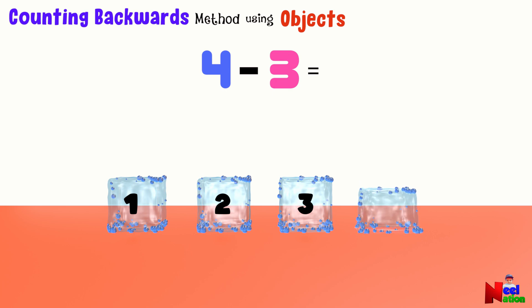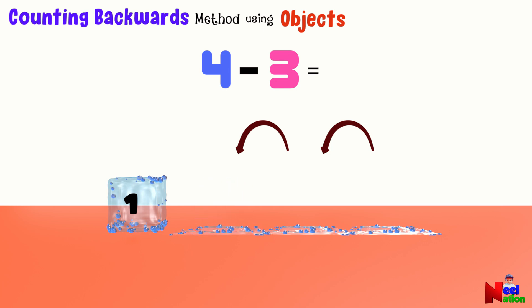1 ice cube melts. Now we have 3. Another one melts. 2. Now we are down to 2. The third ice cube melts. 1. And now we are left with 1 ice cube.